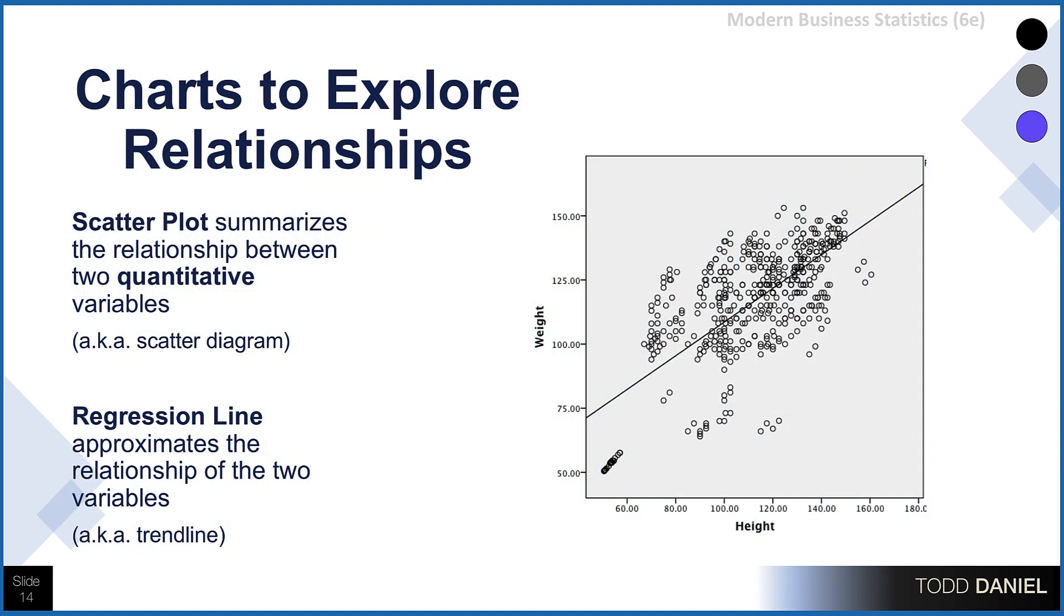So finally, if you want to explore the relationship between two continuous variables, you can use a scatter plot to summarize the relationship. This is also called a scatter diagram in Excel. The line running through the dots approximating their relationship is called a regression line. It is also called a trend line in Excel. We will use scatter plots and regression lines again when we learn about correlation.